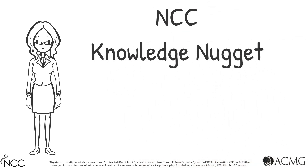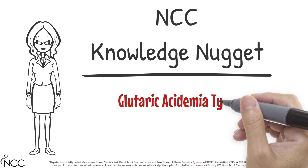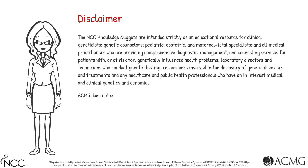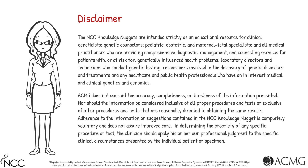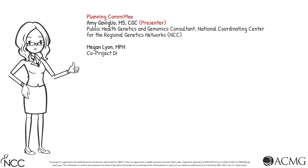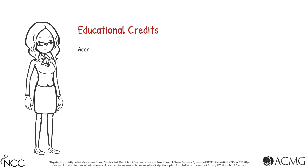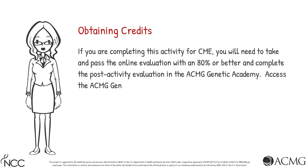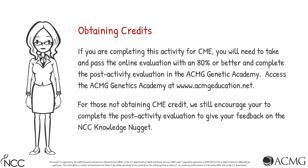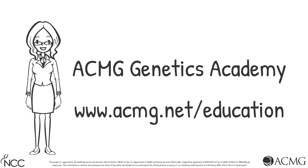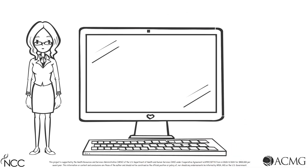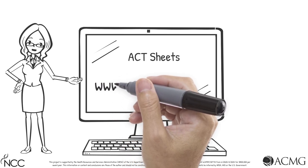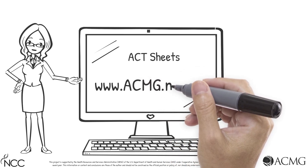Welcome to the ACMG Knowledge Nugget on newborn screening for Glutaric Acidemia Type 1. This activity is intended for educational purposes only. Neither I nor the Planning Committee have any disclosures. This session is approved for 0.25 CME. To obtain CME for this activity, you will need to pass the quiz with a score of at least 80% and complete the evaluation. This session is a companion to the Glutaric Acidemia Type 1 ACT Sheet, which is freely available at www.acmg.net.